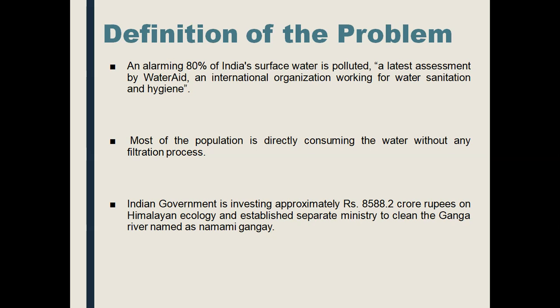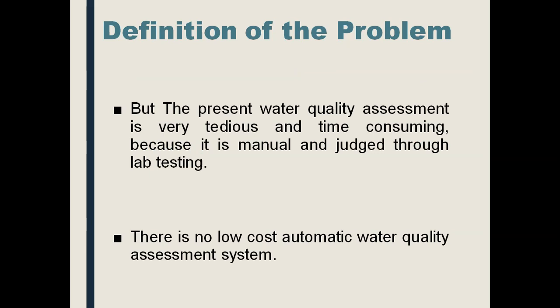To ensure good quality water for the poor population, this project is very important. The Indian government is investing approximately eight thousand five hundred crore rupees on Himalayan ecology and has established a separate ministry to clean the Ganga river, named Namami Gange. Thousands of crores of funds have been released for Namami Gange, which started six to seven years ago.